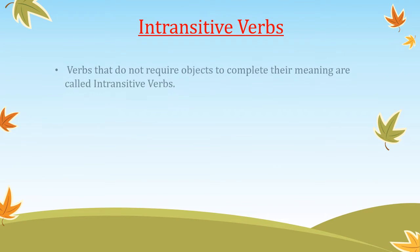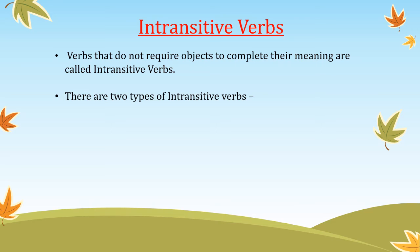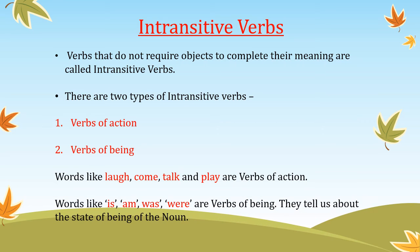Intransitive verbs: verbs that do not require objects to complete their meaning are called intransitive verbs. There are two types of intransitive verbs: verbs of action and verbs of being. Words like laugh, come, talk, and play are verbs of action. Words like is, am, was, and were are verbs of being — they tell us about the state of being of the noun.